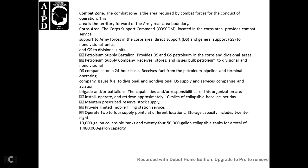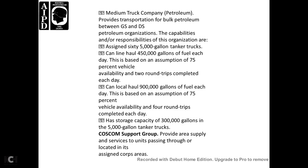The petroleum supply company organization is capable of installing and operating approximately 10 miles of collapsible hose line per day, maintaining prescribed reserve stocks on the supply point, and providing limited mobile filling stations. Storage capacity includes 28 10,000-gallon collapsible tanks and 24 500-gallon collapsible tanks, for a total of 1,480,000 gallons of capacity.